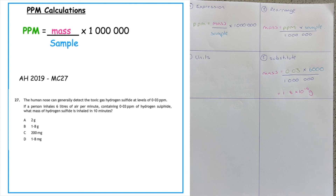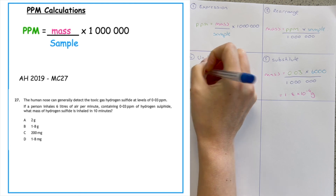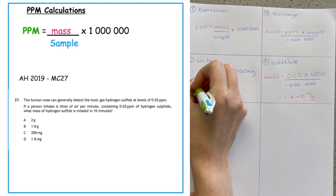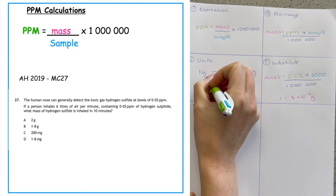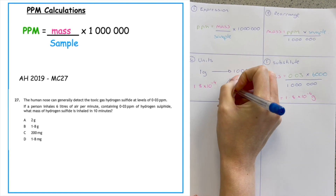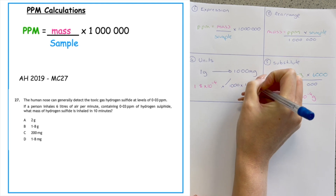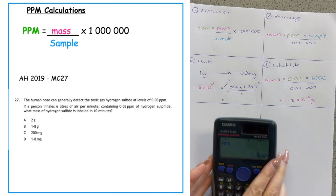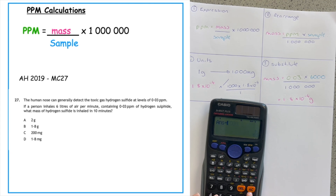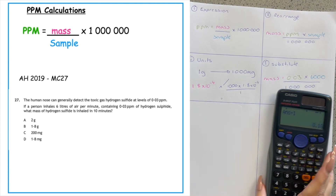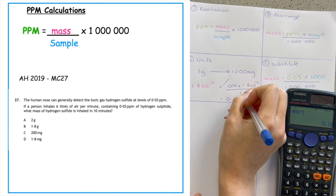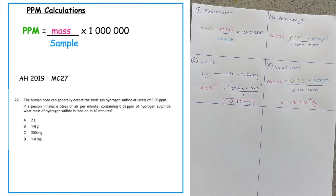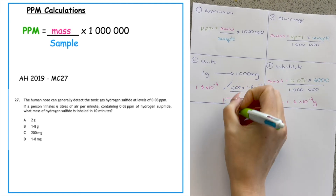Now I do a unit conversion: one gram equals one thousand milligrams. The mass is 1.8 times ten to the minus four grams. Cross multiplying — one thousand times 1.8 times ten to the minus four divided by one — gives 0.18 milligrams. So the correct answer to this multiple choice question is option D.